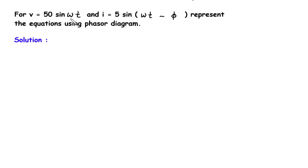For V equals 50 sin ωt and I equals 5 sin(ωt - 5), represent the equations using a phasor diagram.